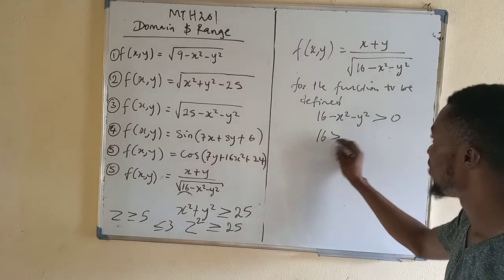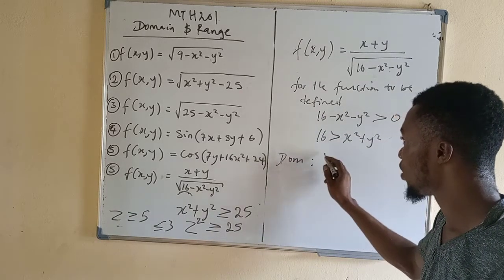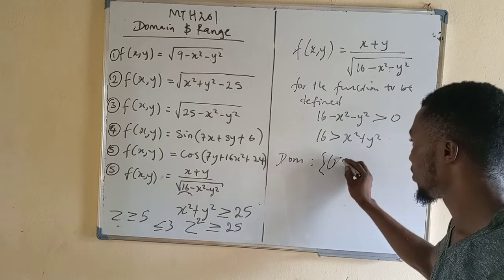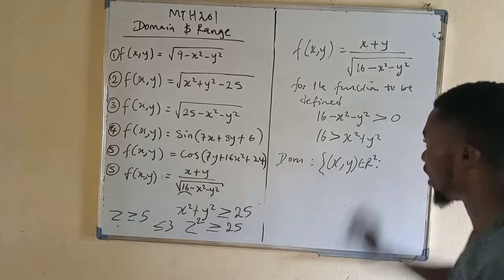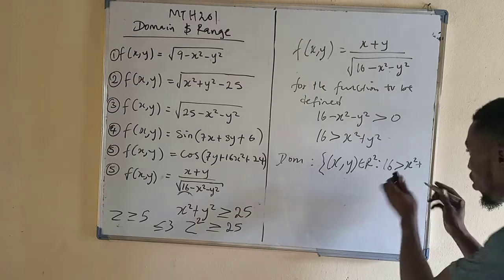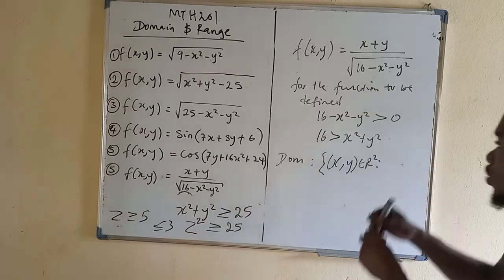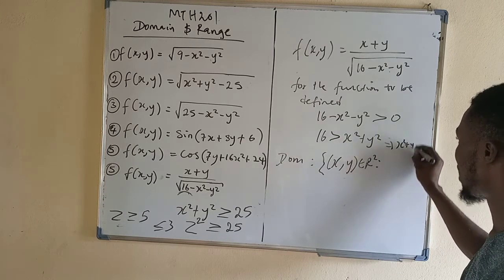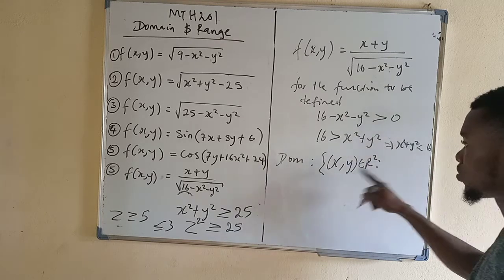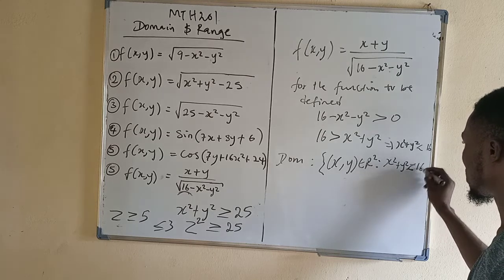So we have that 16 is greater than x squared plus y squared, which means x squared plus y squared is less than 16 (strictly less than, not less than or equal to). The domain is: {(x,y) ∈ ℝ² such that x squared plus y squared is less than 16}.